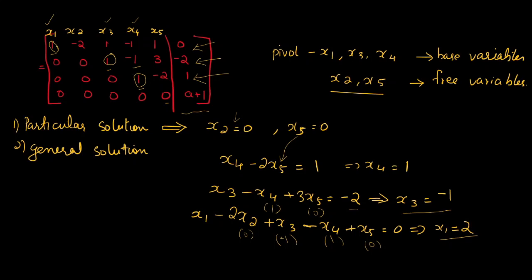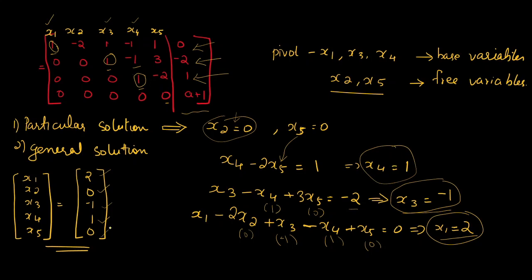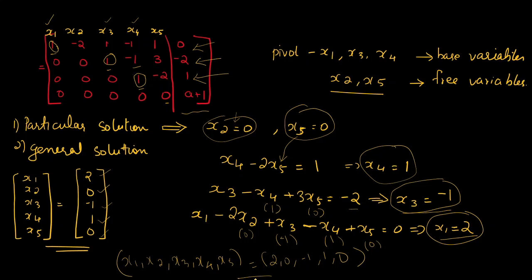Then from the last equation x1 minus 2·x2 plus x3 minus x4 plus x5 = 0, substituting all known values gives x1 = 2. So the particular solution is: x1, x2, x3, x4, x5 = (2, 0, −1, 1, 0), which we can also write in vector format.